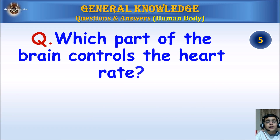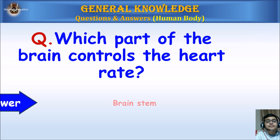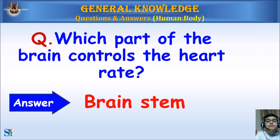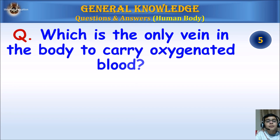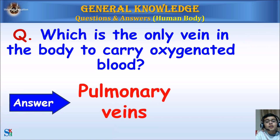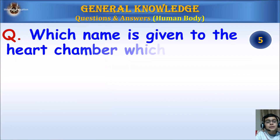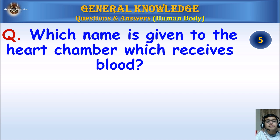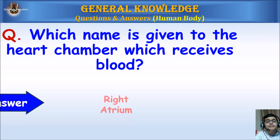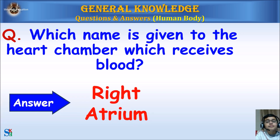Which part of the brain controls the heart rate? Answer: The brain stem. Which is the only vein in the body to carry oxygenated blood? Answer: Pulmonary veins. Which name is given to the heart chamber that receives blood? Answer: Right Atrium.